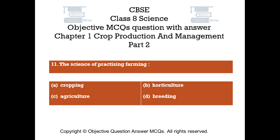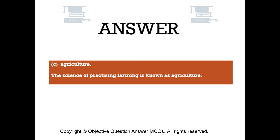Question number 11. The science of practicing farming. Option A: Cropping. Option B: Horticulture. Option C: Agriculture. Option D: Breeding. The right answer is Option C, Agriculture. The science of practicing farming is known as agriculture.